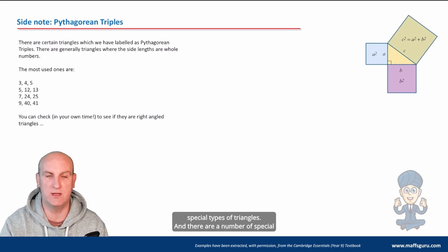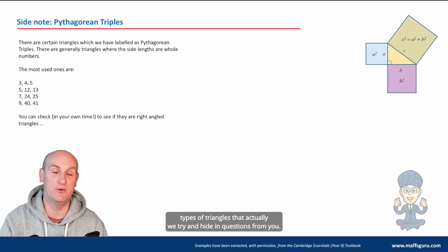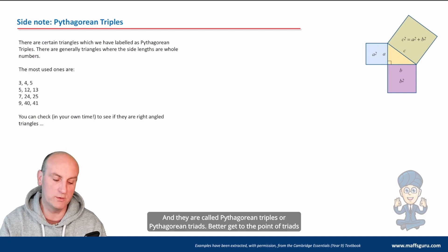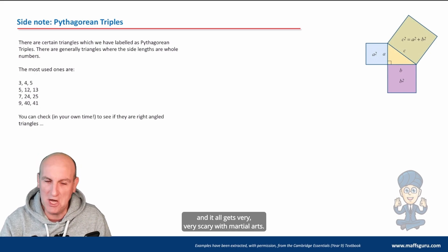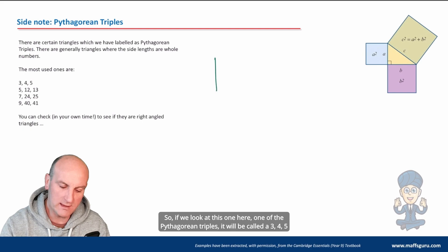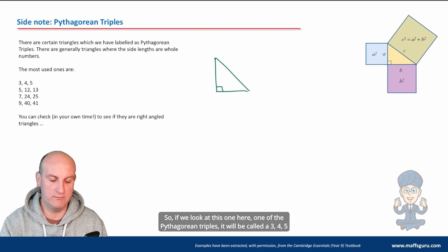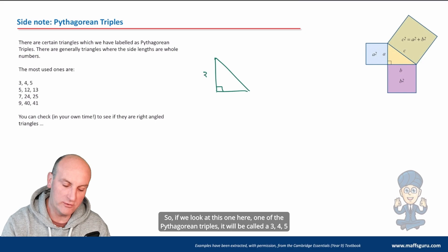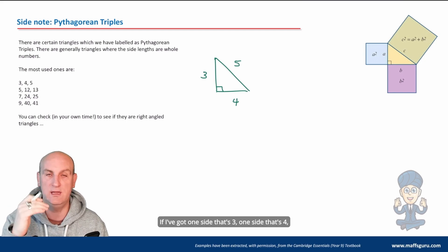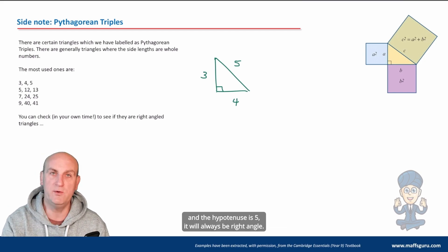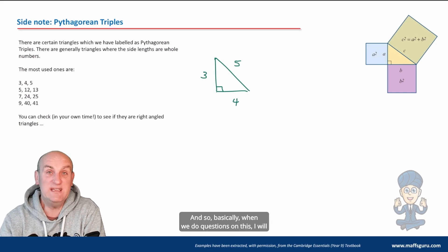In a previous video, I talked about special types of triangles. There are a number of special types of triangles that we try and hide in questions from you, called Pythagorean triples. If we look at this one here, one of the Pythagorean triples is the 3, 4, 5 triangle. That will always be right angle. If I've got one side that's 3, one side that's 4, and the hypotenuse is 5, it will always be right angle.